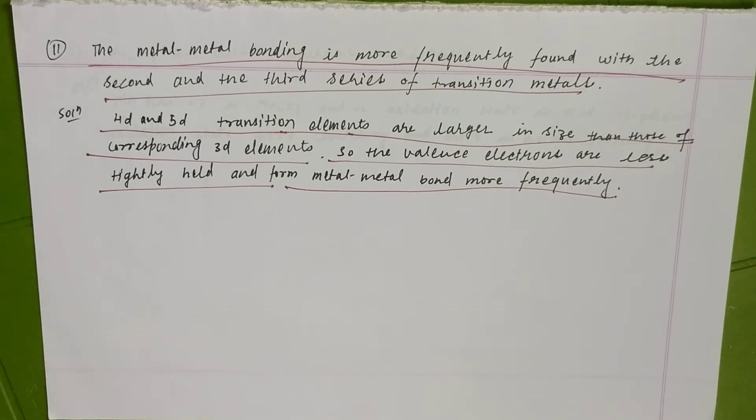The answer is very clear that in the second and third transition series elements, the valence electrons are less tightly held, which means they will be able to form the metal-metal bond more frequently.